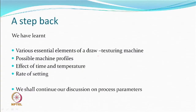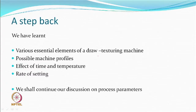We proceed further covering more of the effect of processing parameters. We had looked at various essential components of a draw texturing machine and possible machine profiles to ease the working effect of time and temperature. In this context we tried to understand something called rate of setting, which is not very specific to a material — it can vary within the same material depending on how much draw you are doing, what temperatures you are processing at, and so on.